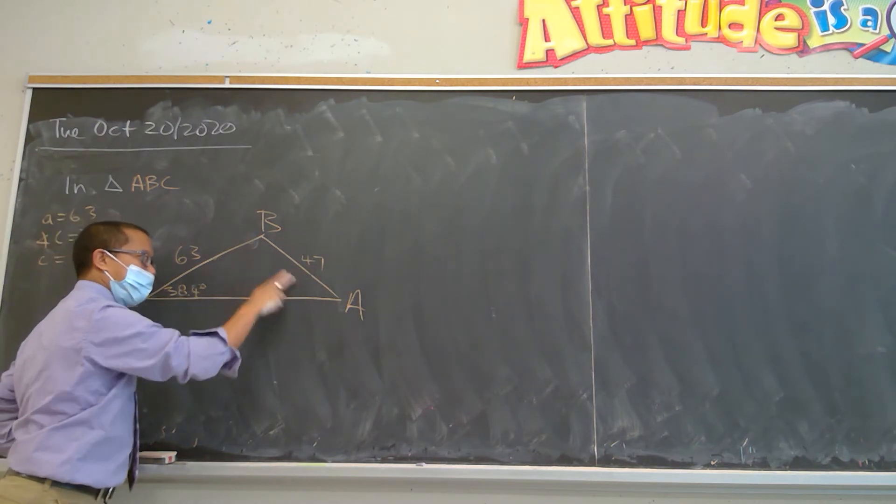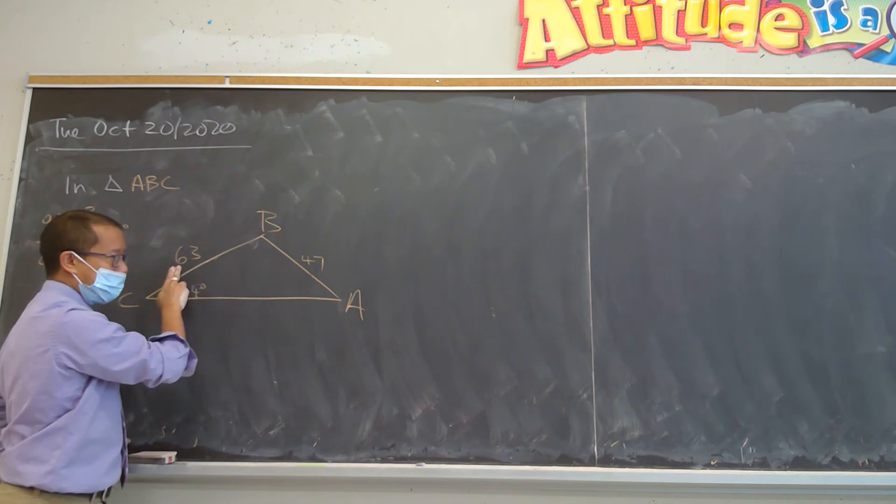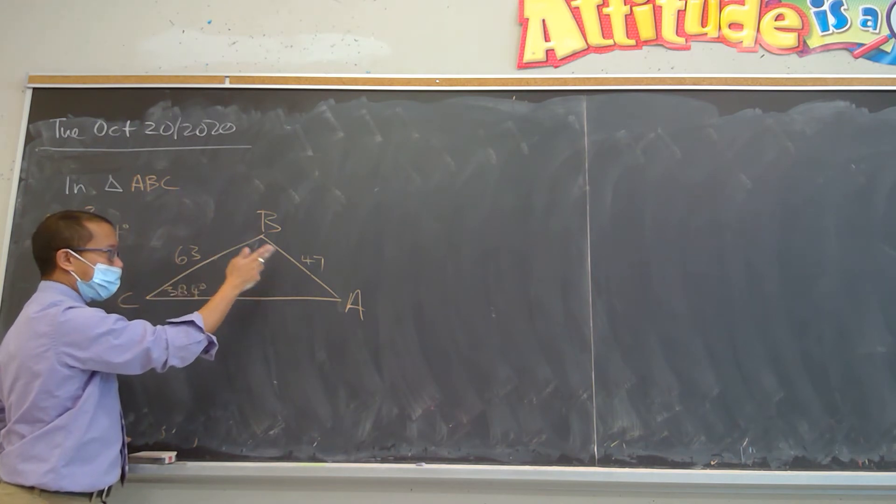And also notice the sides they gave us, this is not 63, so it's non-isosceles, and clearly this side is not longer than this side, meaning side C is not longer than side A.